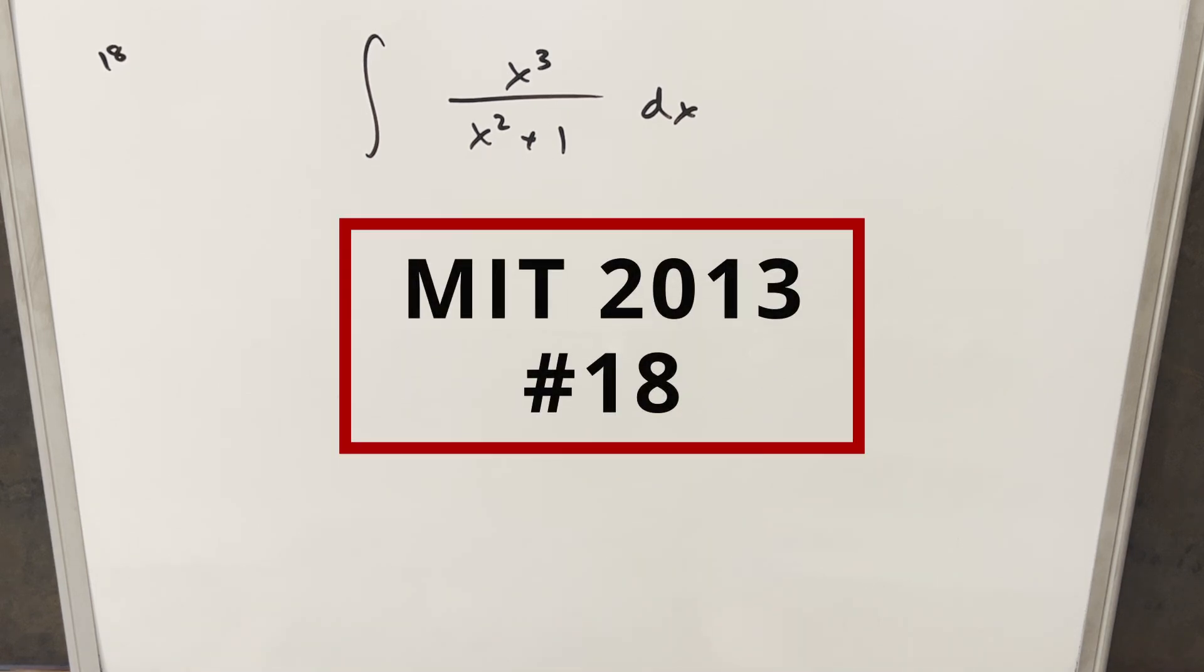Okay, we have here to take another integral from the MIT integration B from 2013, problem 18. We have the integral of x cubed over x squared plus 1 dx.